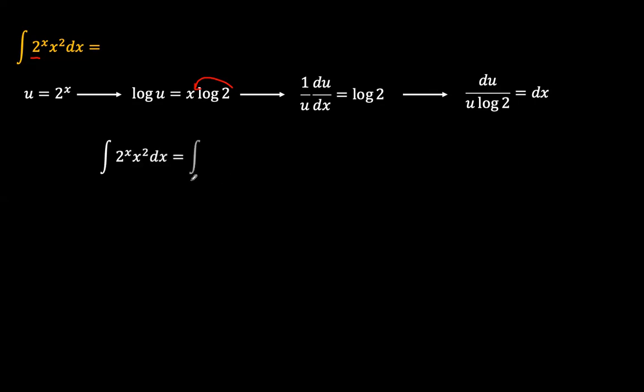Now, the integral 2 to the power x times x squared can now be expressed as: in place of 2 to the power x, we have u; in place of x squared, if you look at this here, x is the same as natural log u over log 2. And so x squared is natural log u over log 2 squared. And then in place of dx, we've now brought this du over u times natural log 2.